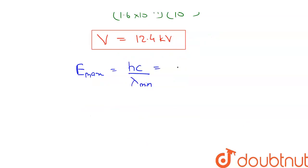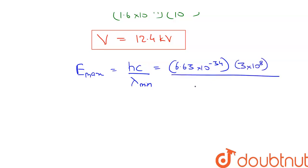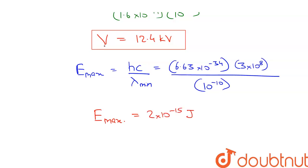Inserting the values: E_max = (6.63 × 10⁻³⁴ J·s × 3 × 10⁸ m/s) / (10⁻¹⁰ m). Upon calculation, we get the maximum energy of the photon E_max equal to 2 × 10⁻¹⁵ joule.